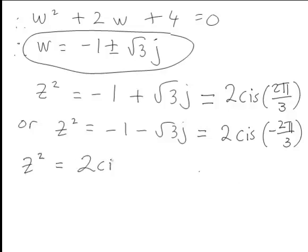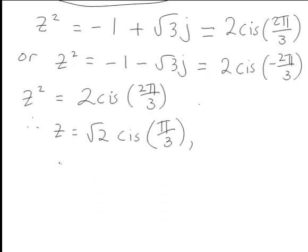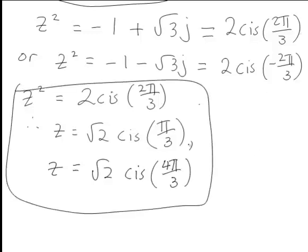For z² = 2 cis(2π/3), both square roots have magnitude √2. The first root has its angle halved, giving √2 · cis(π/3). Since square roots are always π radians apart, the second root is √2 · cis(π/3 + π) = √2 · cis(4π/3).